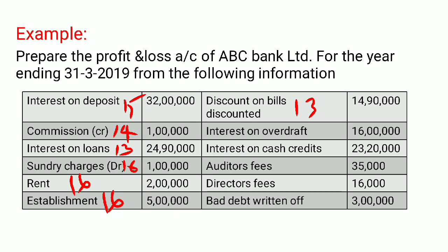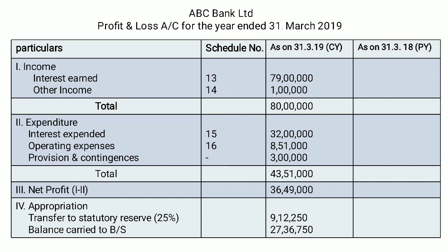Interest on overdraft — an overdraft is a loan facility where the bank allows withdrawal beyond the account limit and charges interest. So interest on overdraft is income earned by the bank — Schedule 13. Auditors fees are an operating expenditure — Schedule 16. Directors fees are also an operating expense — Schedule 16. Bad debts written off is a provision — that goes to provisions and contingencies.